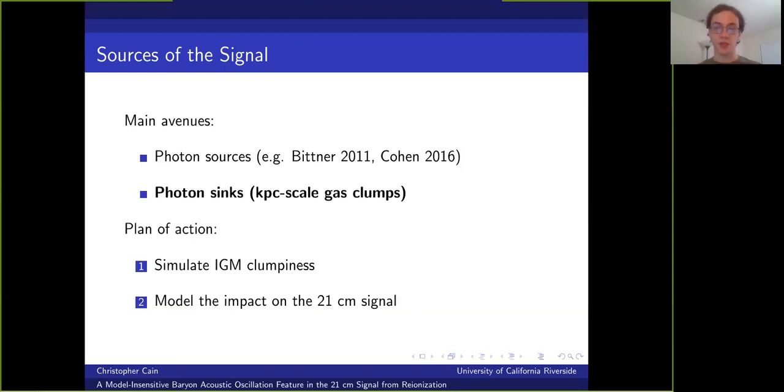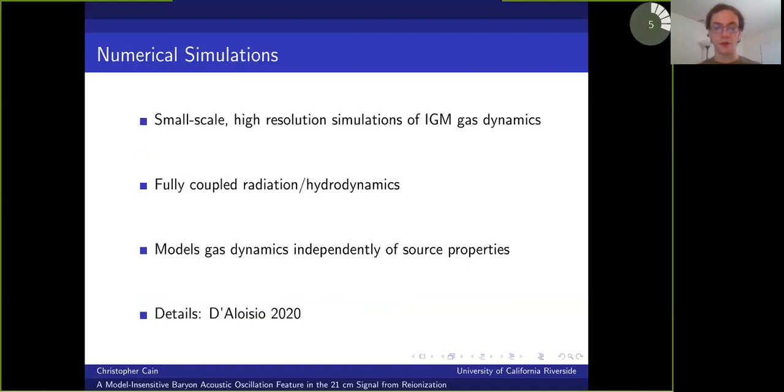So we attack this question in two stages. First, we simulated how the IGM clumpiness evolves during reionization in the presence of stream velocity, and we assessed how important this is for the recombination rate. And second, we used an analytical model for the 21 centimeter signal to assess the detectability of the resulting BAO feature. So our numerical simulations are designed to simulate the clumpiness of the IGM during reionization, and so they resolve the scales small enough to capture the recombination rate correctly.